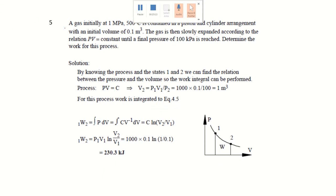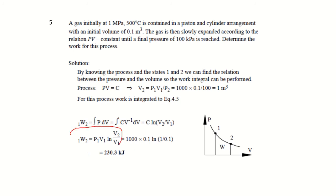Example 5: A gas initially at 1 MPa is constrained in a piston-cylinder with initial volume 0.1 m³. It expands isothermally (PV = constant) until the final pressure is 100 kPa. The isothermal work done is W = P1V1·ln(V2/V1). Substituting the known values gives the work done directly.